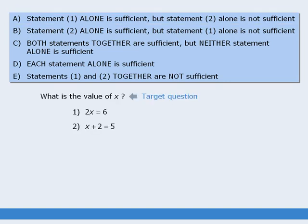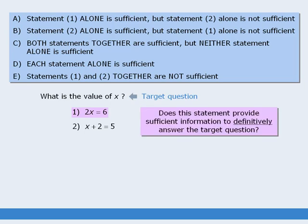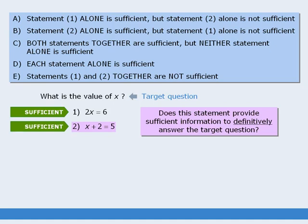Here is another question. The target question still requires us to find the value of x. Statement 1 provides sufficient information to definitively answer the target question, so statement 1 is sufficient. Moving on to statement 2 — if x plus 2 equals 5, then x must equal 3. So statement 2 is also sufficient. In this case, the answer is D, which says that each statement alone is sufficient.